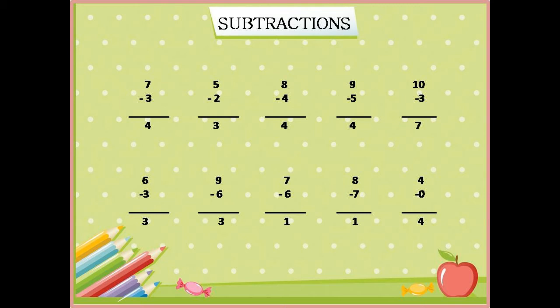Pehli example hai seven minus three is equal to four. Isko solve karne ke liye sabse pehle jahan seven likha hai, wahan hum seven balls banayenge. Iske baad hume seven ke niche three likha nazar aa raha hai. Ab hum in seven balls mein se three balls ko minus yani cross kar denge.